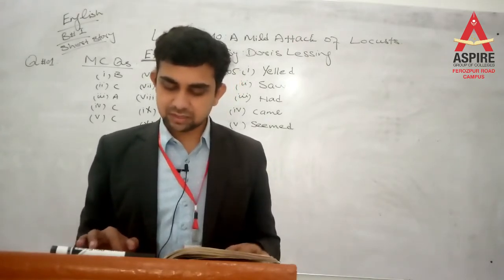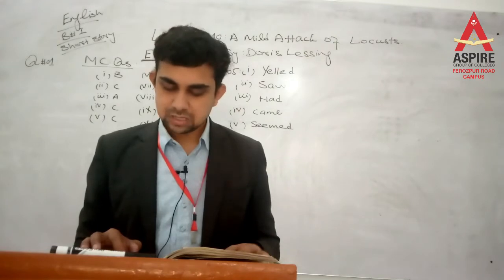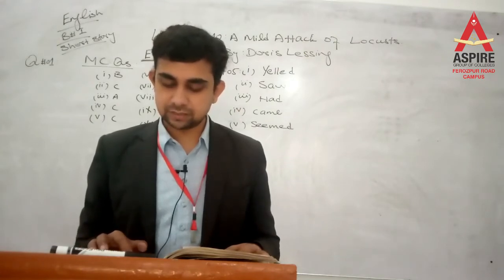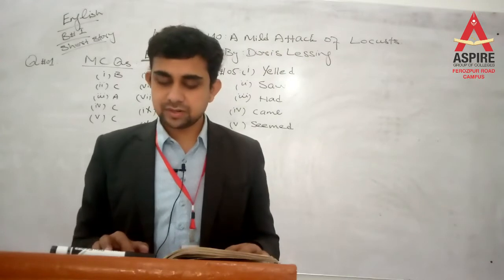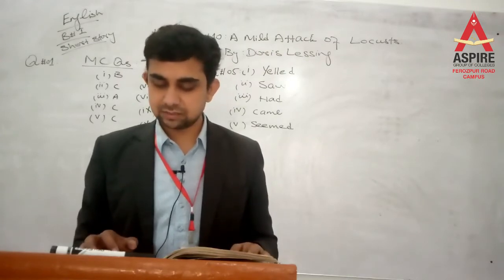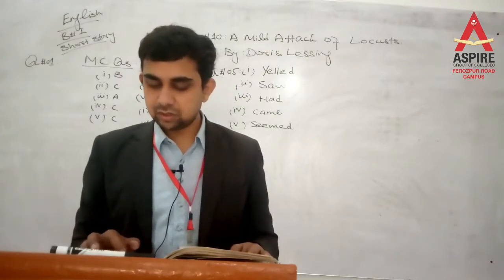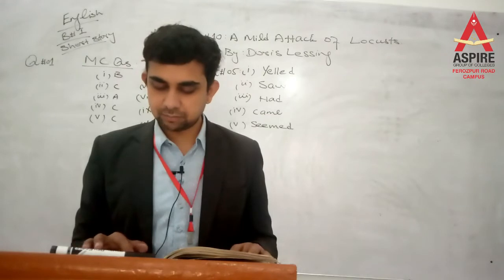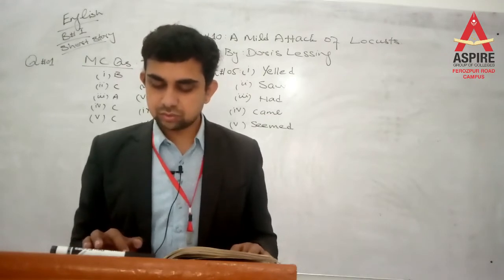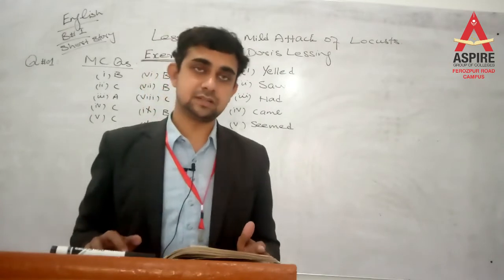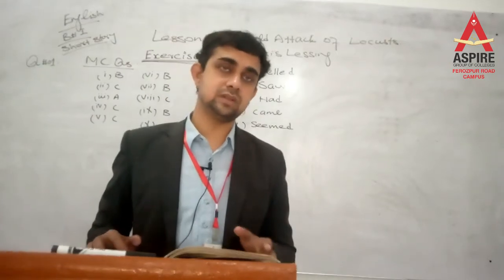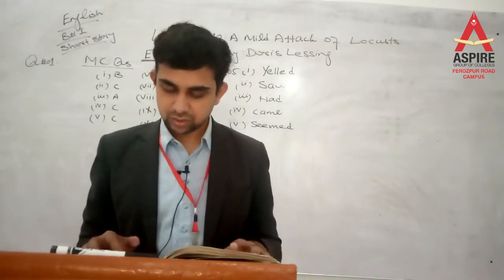Next question: What was the condition of the trees? The trees looked queer and still — عجیب اور ساکت نظر آ رہے تھے. They were clotted with insects — کیڑوں سے بھرے ہوئے تھے. Their boughs bent down to the ground due to the weight of the insects — کیڑوں کے بوجھ کی وجہ سے ان کی شاخیں زمین پر جھکی ہوئی تھیں.